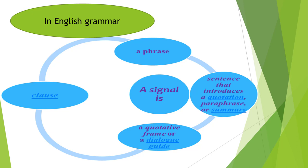We can speak about common connectors, also called transitions, such as: for example, for instance, as another example, one example, on the one hand, one example of, finally, on the other hand, so, in conclusion, however, but also, first, second, third, etc.